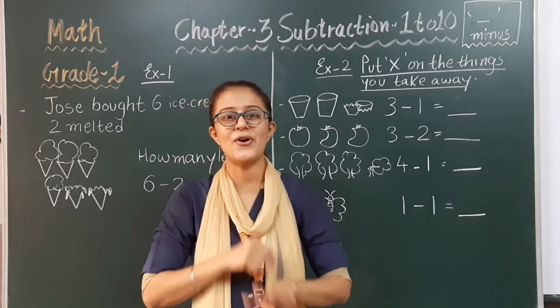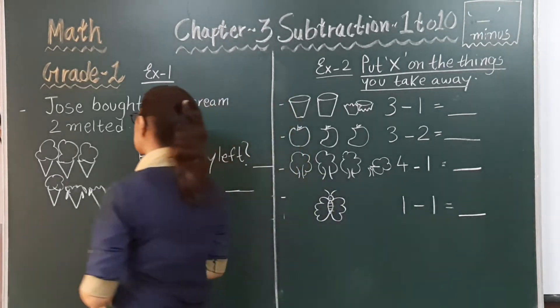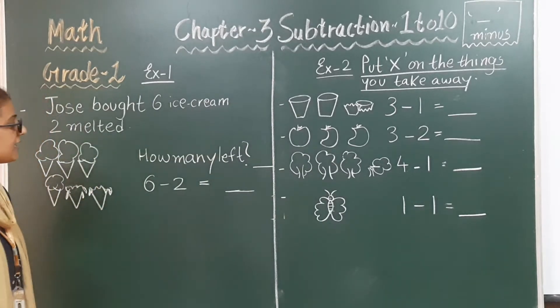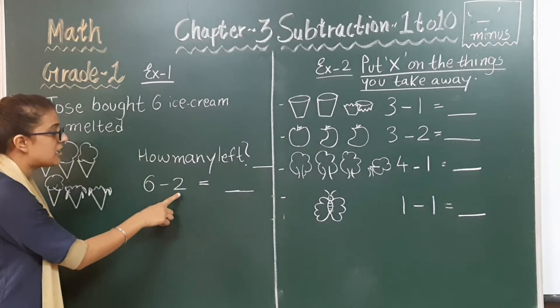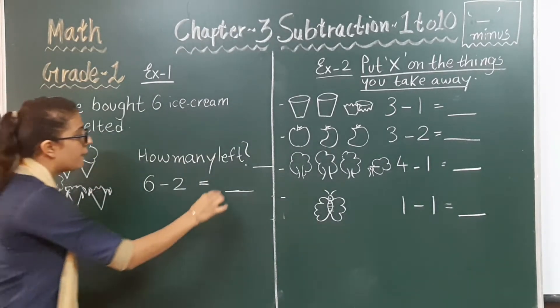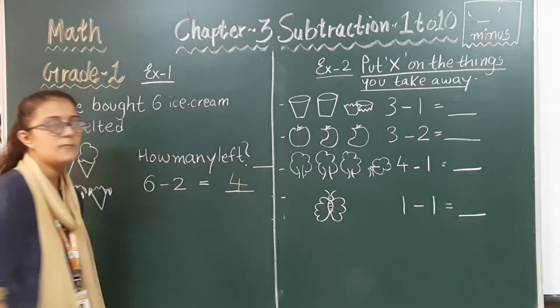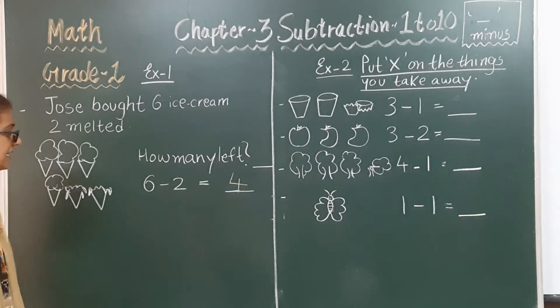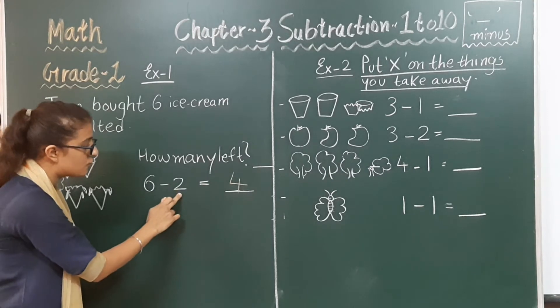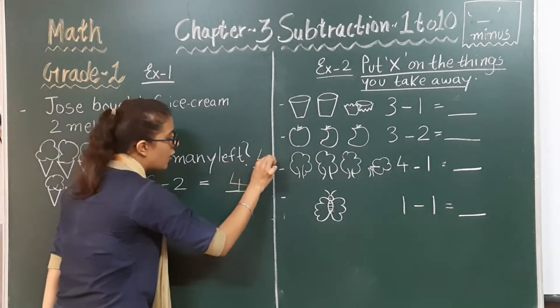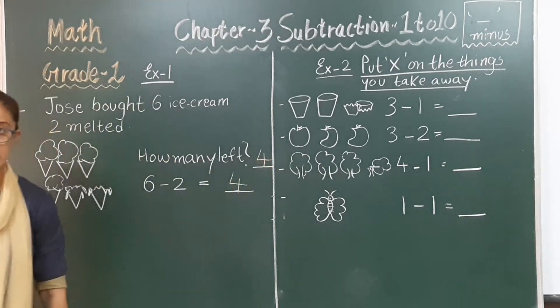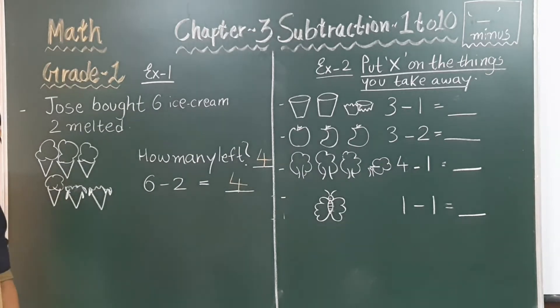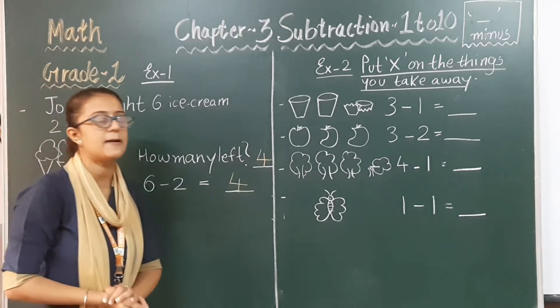Yes. One, two, three, four. So we can read like that. Six take away two is four. And we write as six minus two is equal to four. Now let's move forward to exercise number two.